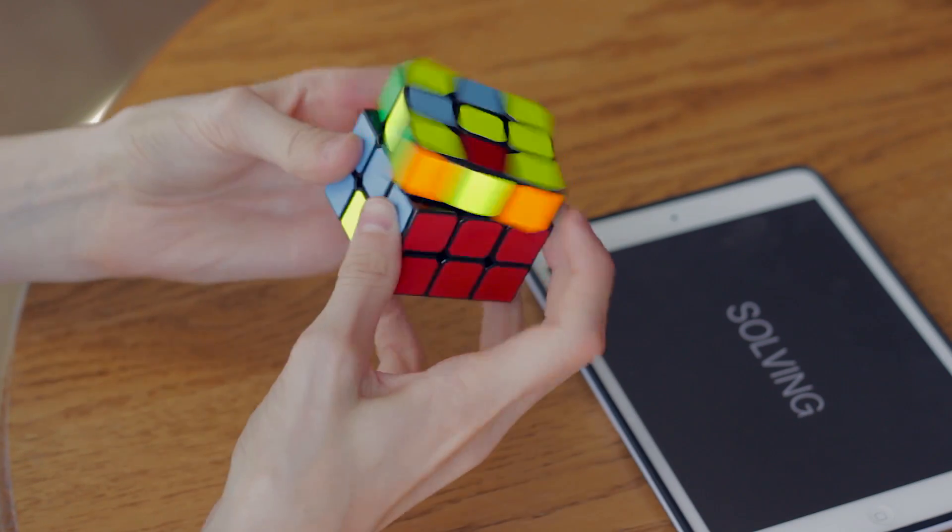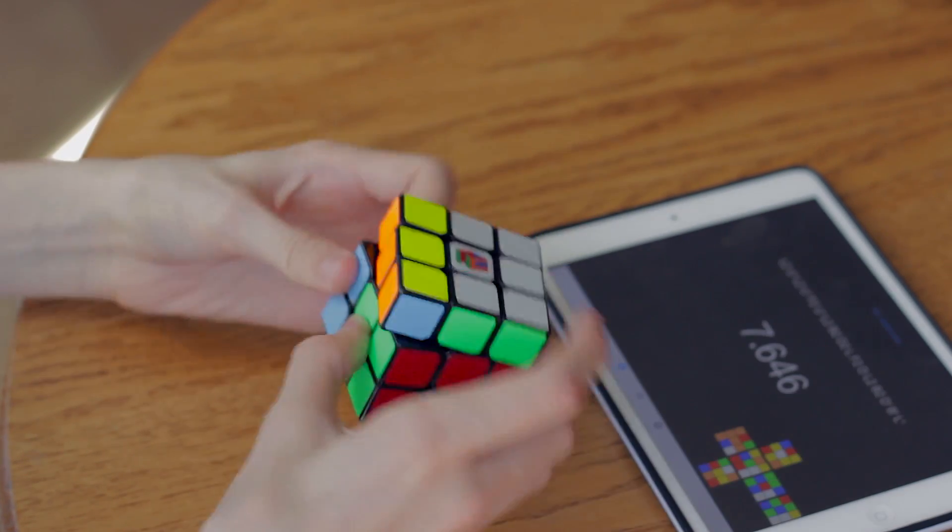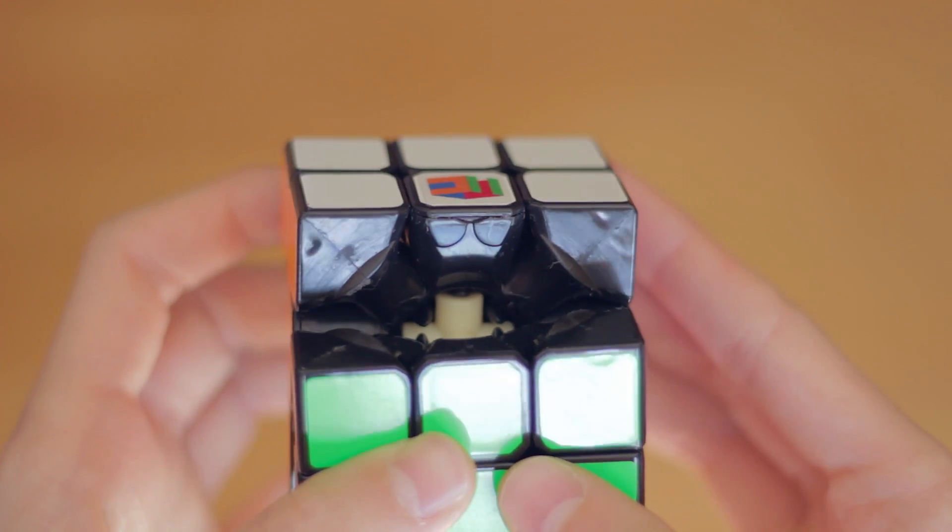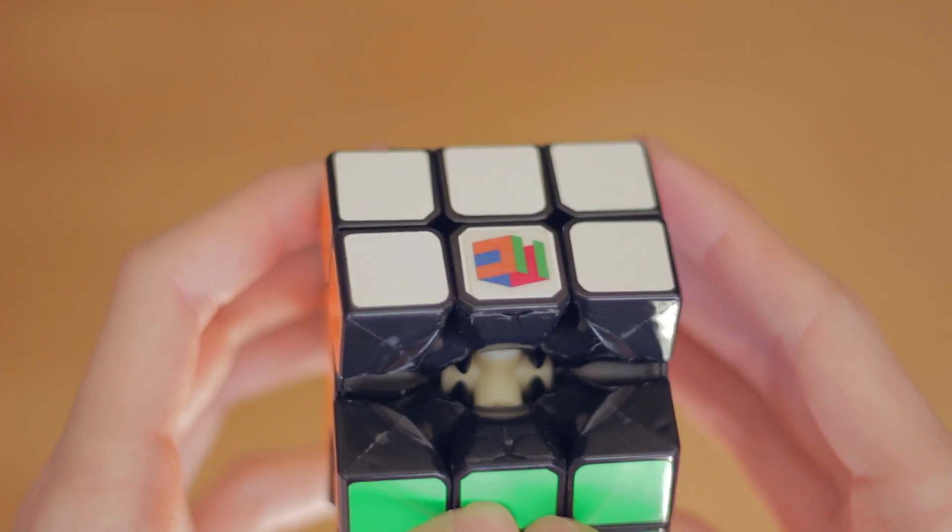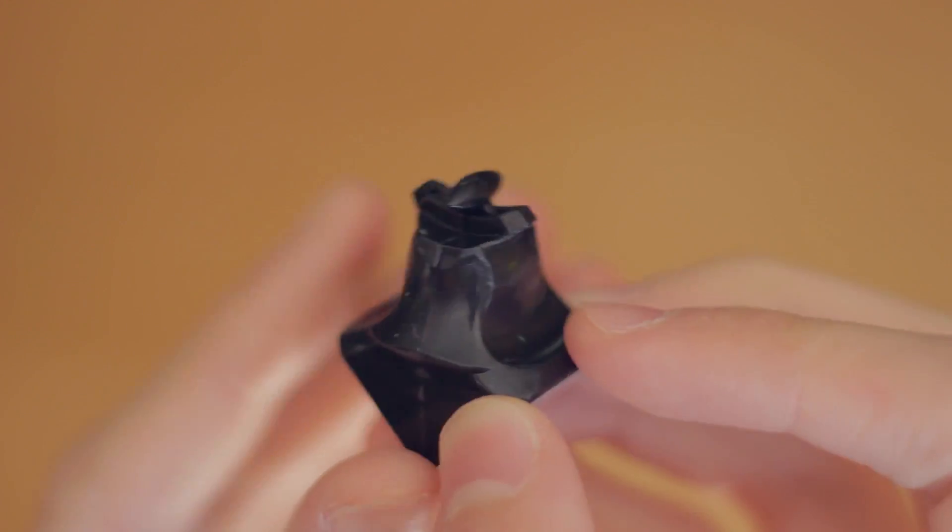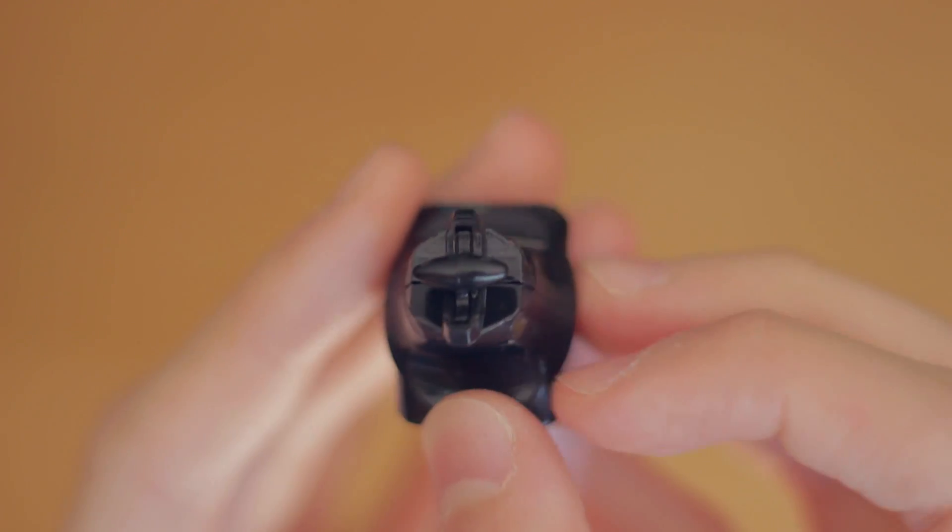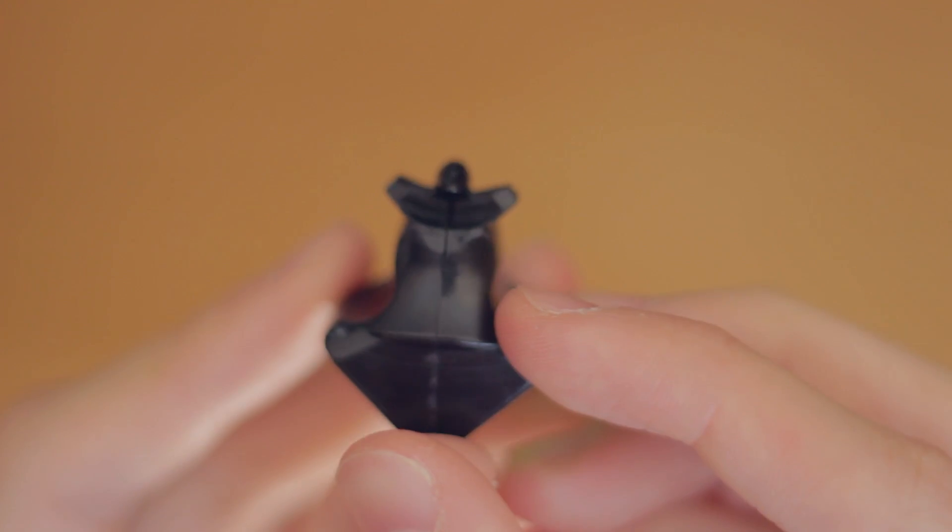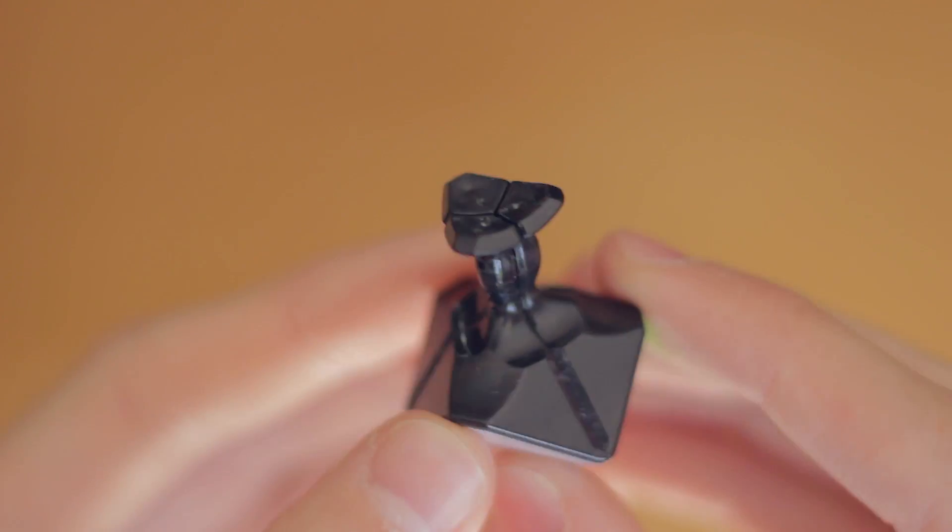As far as the mechanism goes, there's nothing too complex with the Zanchi. It has blocky pieces which help contribute to its feel. The cube also includes torpedoes which help to prevent, but not completely stop, popping. Pops do happen when trying to corner cut too much in either direction, and they usually tend to involve multiple pieces.